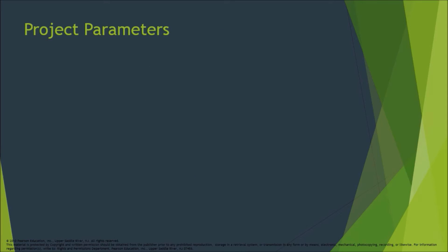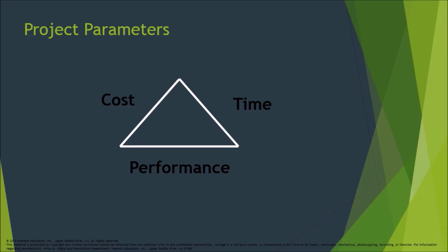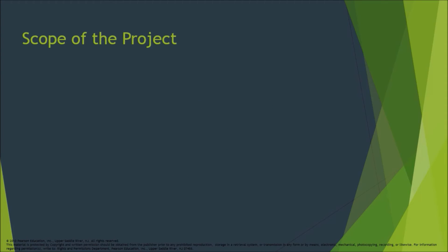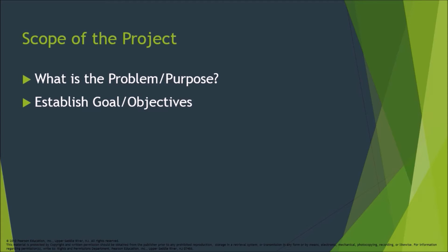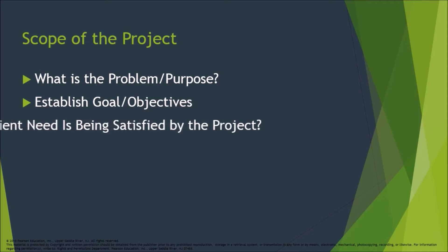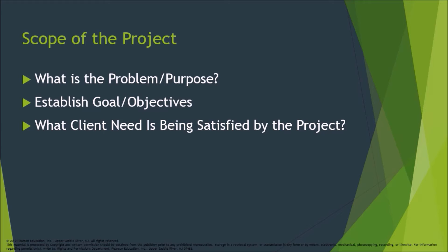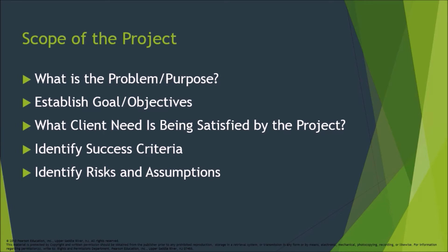The project parameters are Cost, Time, and Performance. Scope of the project addresses: what is the problem or purpose, establish goal or objectives, what client need is being satisfied by the project, identify success criteria, and identify risks and assumptions.